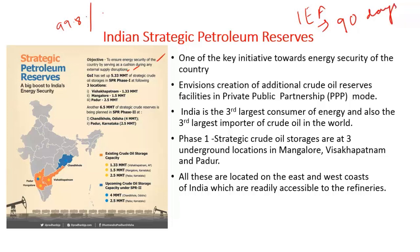Under Strategic Petroleum Reserves Phase 1, India built three reserves at Visakhapatnam in Andhra Pradesh, Padur and Mangalore in Karnataka. These three have a capacity to store 5.5 million metric tons of strategic crude oil. Under Phase 2, the government has proposed to enhance storage capacity by adding another 6.5 million metric tons by constructing crude reserves at Chandikhol in Odisha and Padur in Karnataka. With these two new reserves, India's cushion for crude oil needs would increase to 87 days.